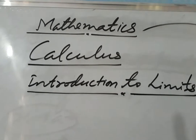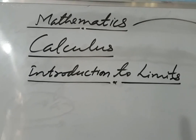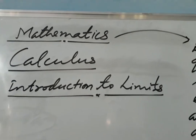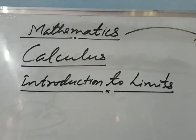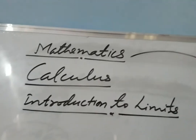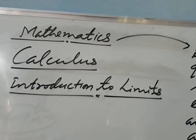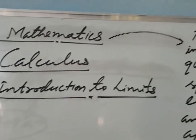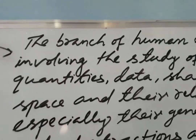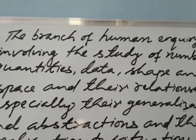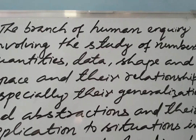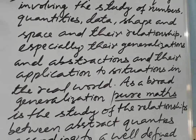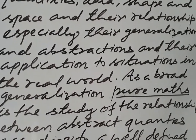On the top of the board I have written 'Mathematics,' in the second line 'Calculus,' and in the third line 'Introduction to Limits.' First of all, I would like to tell you about mathematics. What is mathematics? What is the definition of mathematics? Most students struggle to define mathematics after studying it for 12 or more years. The definition of mathematics is: the branch of human inquiry involving the study of numbers, quantities, data, shape and space and their relationships, especially their generalizations and abstractions and their applications to situations in the real world.